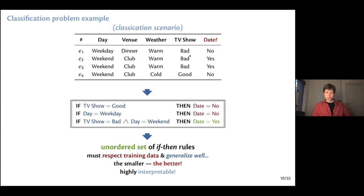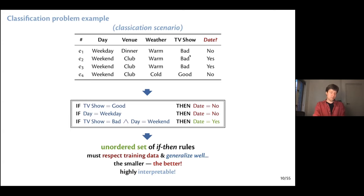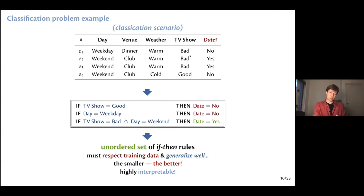Because there's no order, decision sets are really simple to interpret. If there is a rule that fires for this instance, we just pick it, and this conjunction of literals serves as an explanation. Hopefully we end up having a small model — that's why in logic-based interpretable models we try to minimize their size.